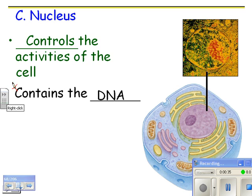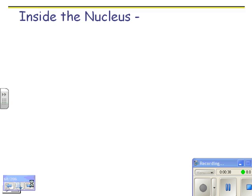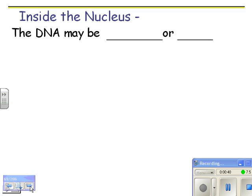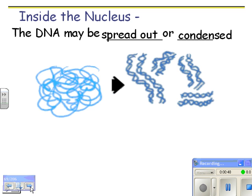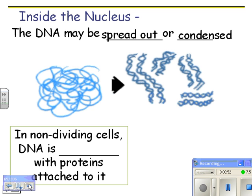Inside the nucleus, the DNA can either be spread out or condensed — coiled up tightly. When it's spread out, the cell is not dividing. In non-dividing cells, DNA is spread out with proteins attached to it. The reason it's spread out when not dividing is that you're going to need to read it and use it at some point. If you need to use a piece, enzymes can go and make it into RNA, and then the RNA can leave the nucleus.